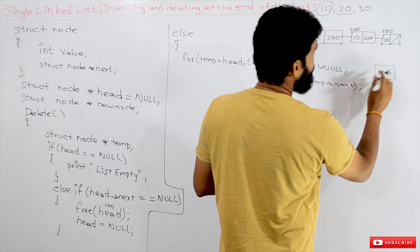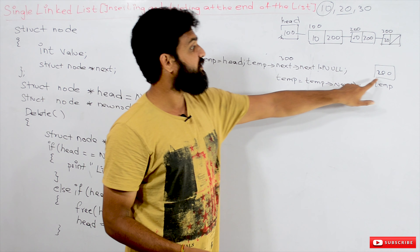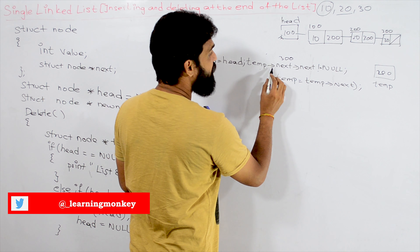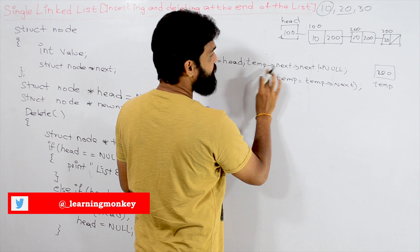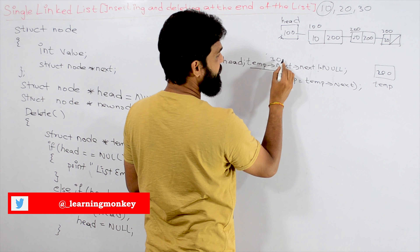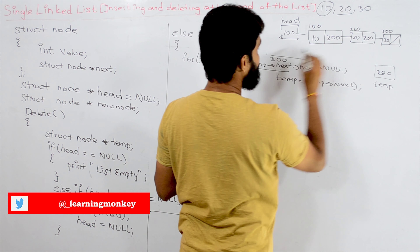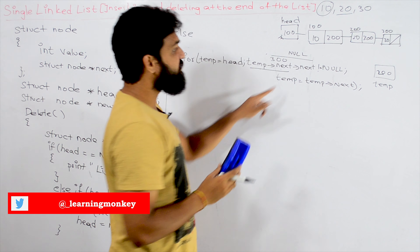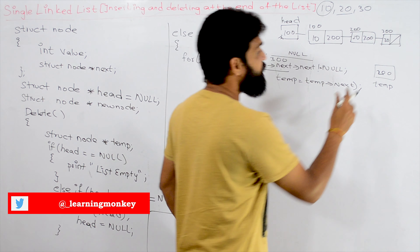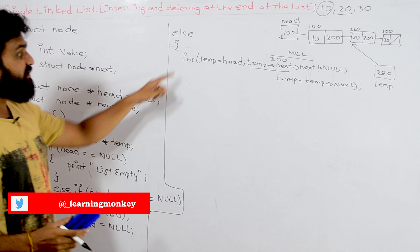To find the last-but-one node, we use: for(temp = head; temp->next->next != null; temp = temp->next). The condition temp->next->next != null ensures we stop at the second-to-last node rather than the last node.